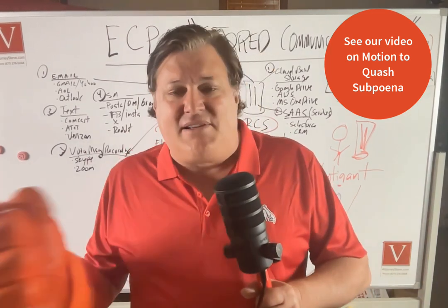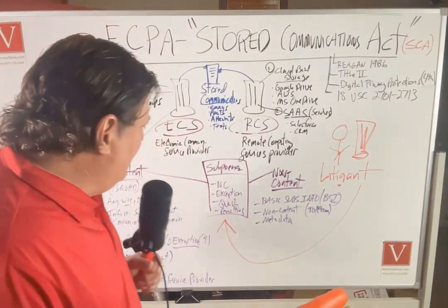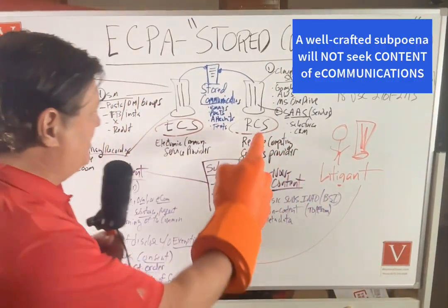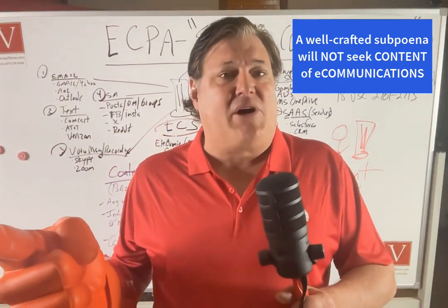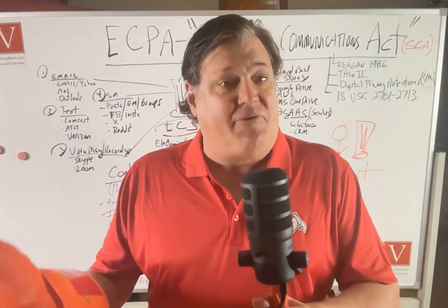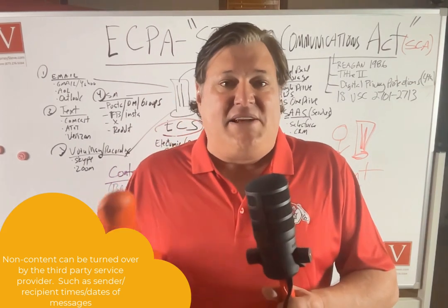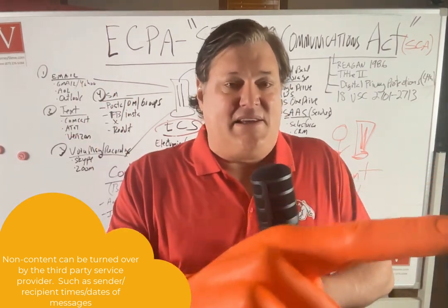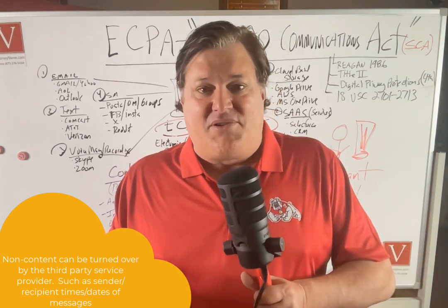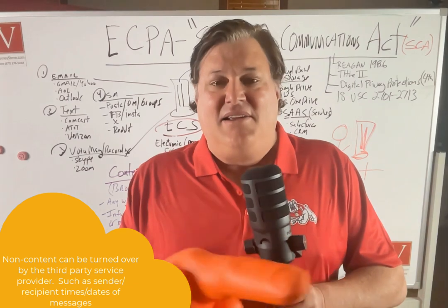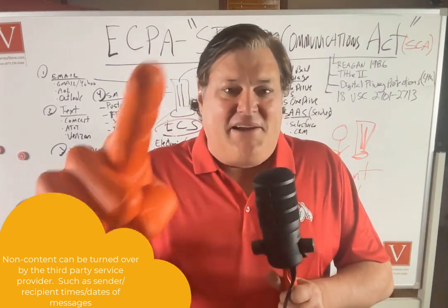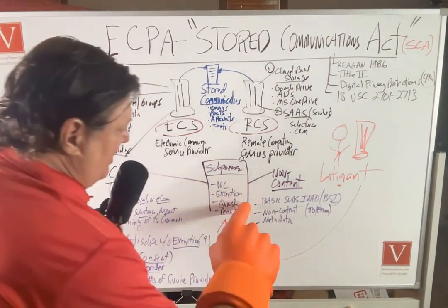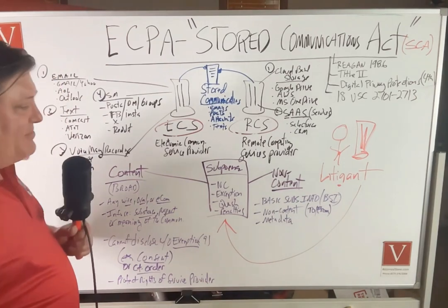A lot of these things get worked out between attorneys. A well-crafted subpoena will not be seeking content from these covered entities. It will be seeking basic subscriber information — what we call BSI. Basic subscriber information can freely be provided, and so can non-content. Non-content means: I don't want the contents of any messages, what I do want is dates that this email was sent to that email, dates that this person sent to that person — strictly data without the content of the message. That includes to, from, various metadata — and that is proper.